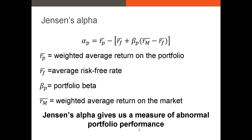Next, we have Jensen's alpha. The alpha is the same alpha from the CAPM calculations. Jensen's alpha is the weighted average portfolio alpha — we calculate it by rearranging the model form of the CAPM equation. We take our average return on the portfolio and subtract the expected return, which is the risk-free rate plus the portfolio beta times the market risk premium. If the alpha is positive, it means our portfolio outperformed its expected return based on the CAPM. If the alpha is negative, it means our portfolio underperformed during that period.